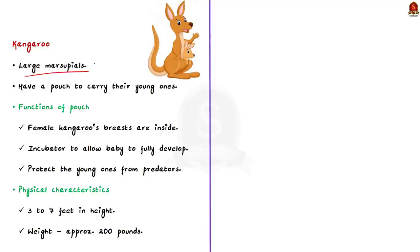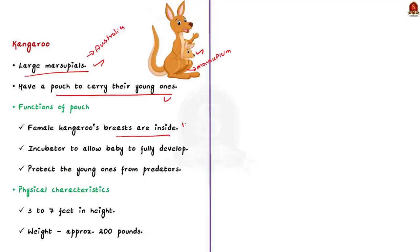Kangaroos are large famous marsupials native to Australia. They have a pouch to carry their young, located on the lower abdomen. The kangaroo's pouch is technically called a marsupium and it performs a number of functions. The female kangaroo's breasts, which she uses to nurse her young, are inside her pouch. The pouch also functions like an incubator to allow a joey — a baby kangaroo — to fully develop, and it helps protect the young from predators.